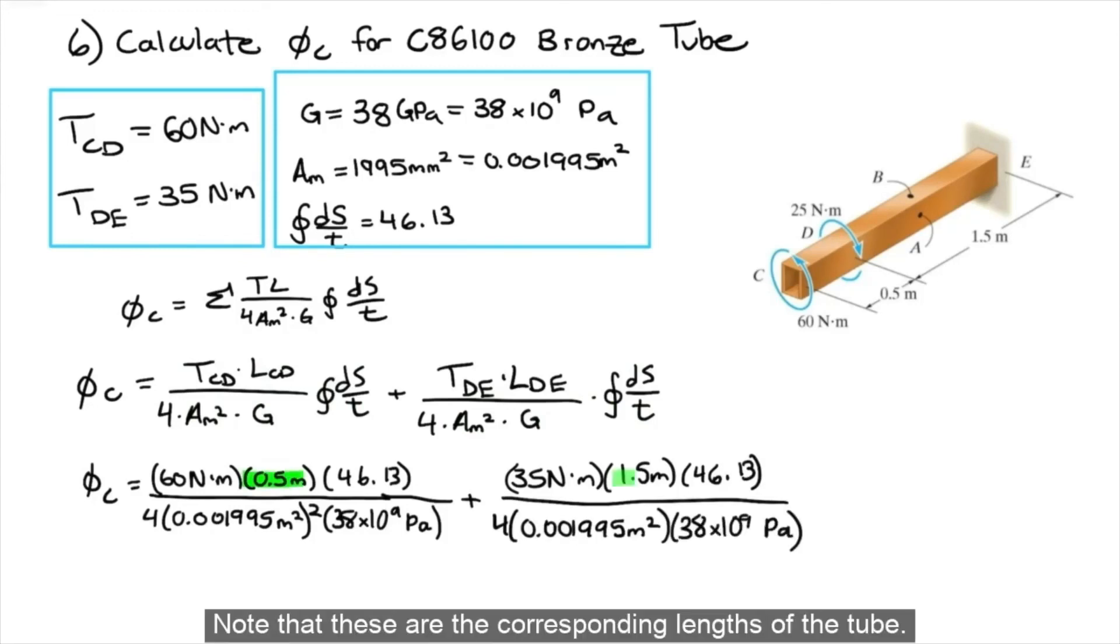Note that these are the corresponding lengths of the tube. From points C to D, the length of that section of the tube is 0.5 meters, and for points D to E, the length is 1.5 meters.